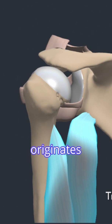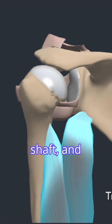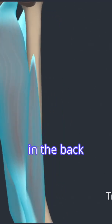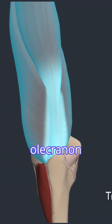The long head originates from the infraglenoid tubercle of the scapula. The lateral head originates from the lateral surface of the humeral shaft. And the medial head originates from the medial surface of the humeral shaft. The three heads join in the back of the upper arm to insert into the olecranon of the ulna.